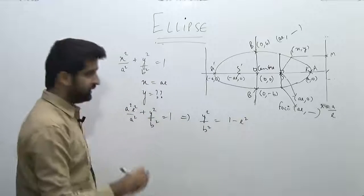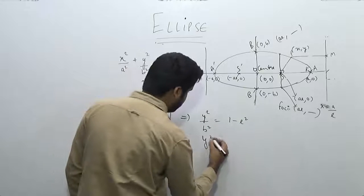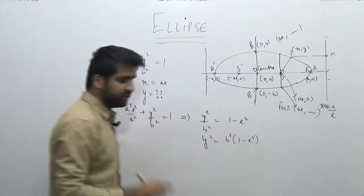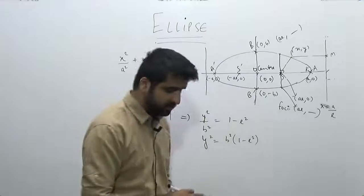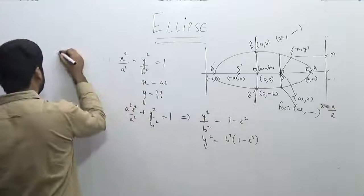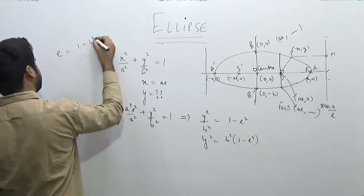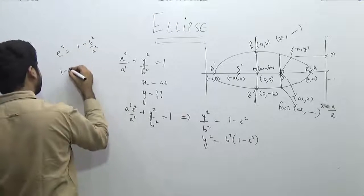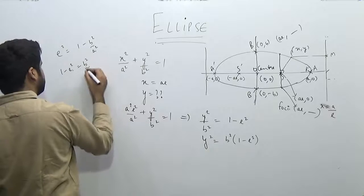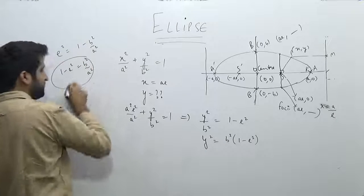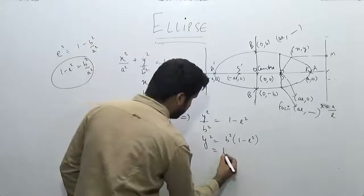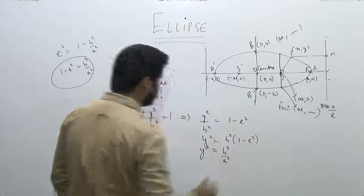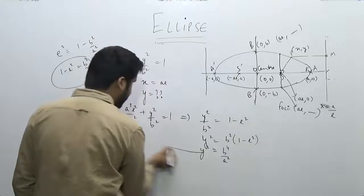So y² = b²(1 − e²). We know that e² = 1 − b² / a², therefore 1 − e² = b² / a². Substituting this value, y² becomes b² × (b² / a²) = b⁴ / a².